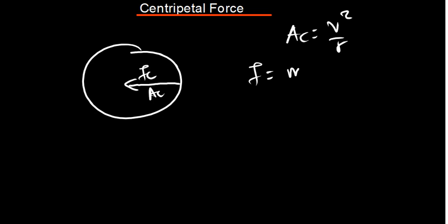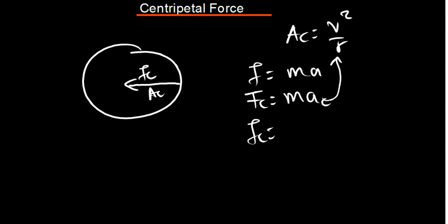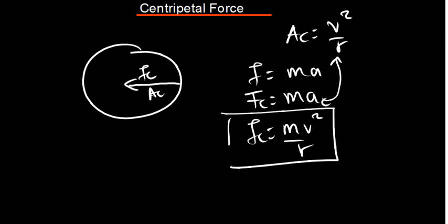We also know that force is given by mass times acceleration. So for centripetal force: centripetal force equals mass times centripetal acceleration. Since centripetal acceleration is v squared over r, we replace a with v squared over r. Therefore centripetal force is given by mv squared over r. This is the formula for centripetal force.